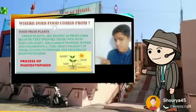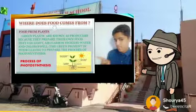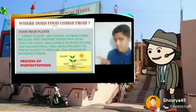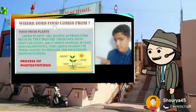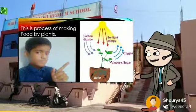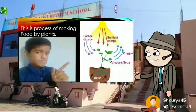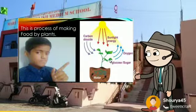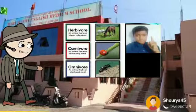They need sunlight, carbon dioxide, and water to make their food, and this food becomes sugar or glucose. Now you can see this process. Isn't it shocking? How we humans make food and how plants make food — it's quite different. Let us move on to the next slide.